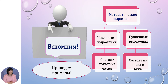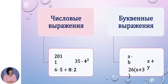Приведем примеры. Числовым выражениям мы можем предложить просто число, например 2011, или такое выражение как 35 минус 4 во второй степени, либо числовое выражение 6 умножить на 5 плюс 8 делённое на 2, то есть используя не только числа, но и действия над числами.